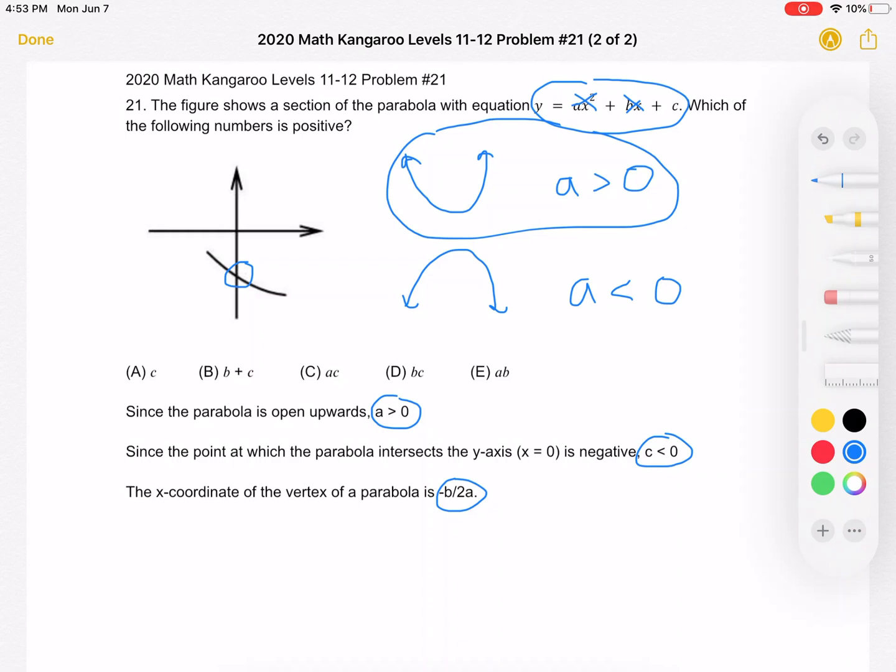So in order to find some of the roots, you might remember Vieta's formula: r1 plus r2 equals negative b over a, and then divide that by 2. So we can see that the vertex is somewhere over here. So the x-coordinate of the vertex is a positive number. So that means that the x-coordinate of the vertex, which is negative b over 2a, is a positive number.